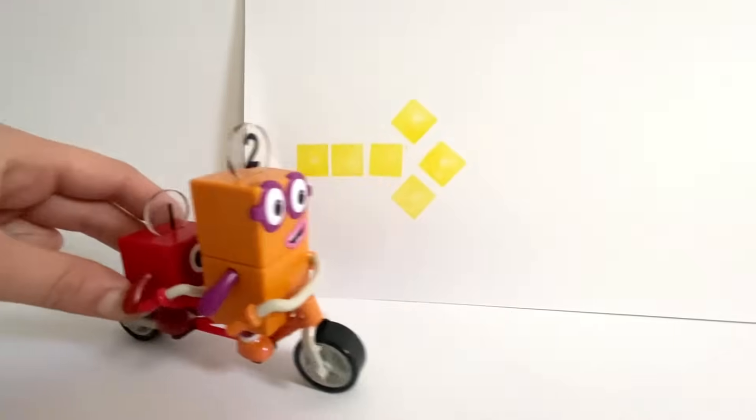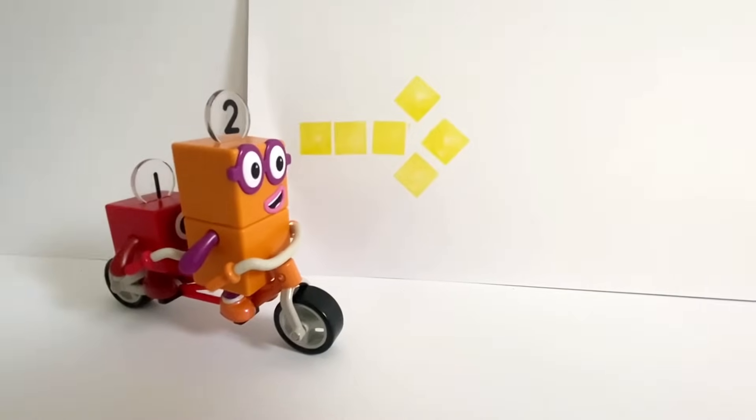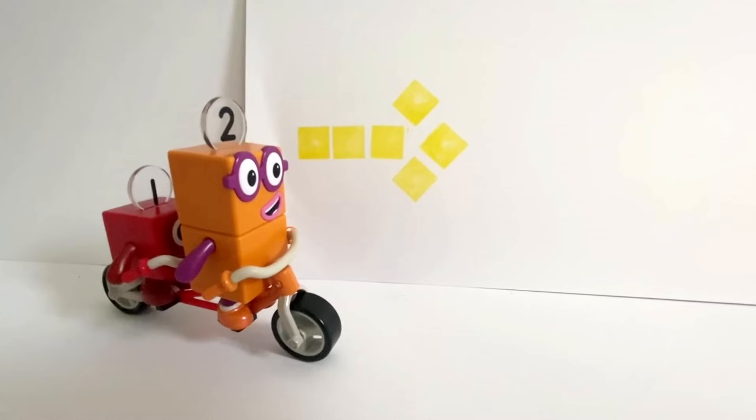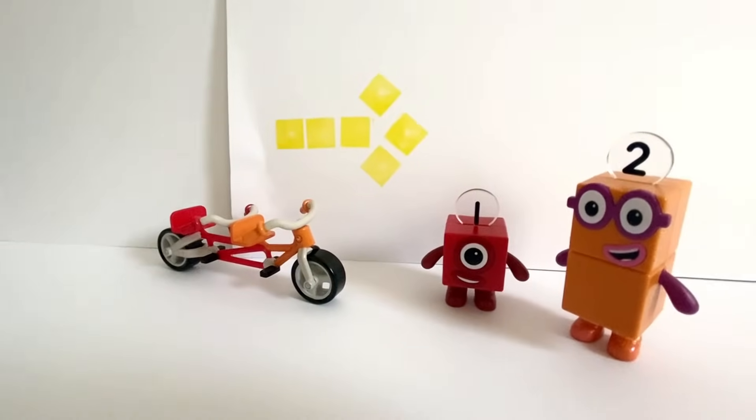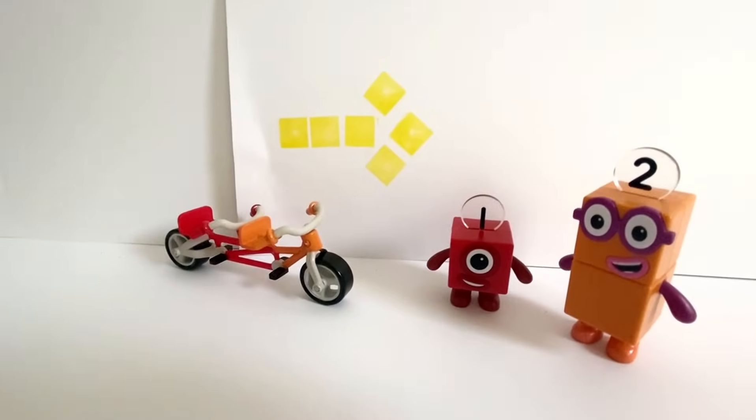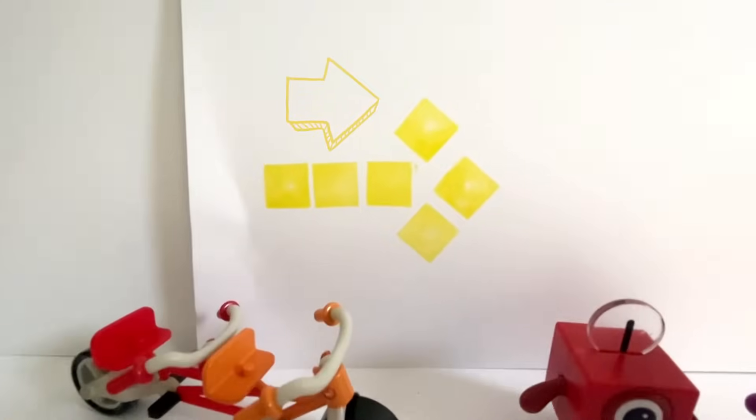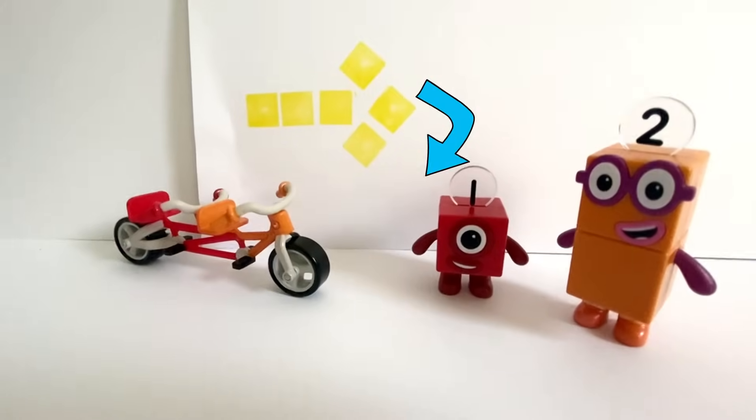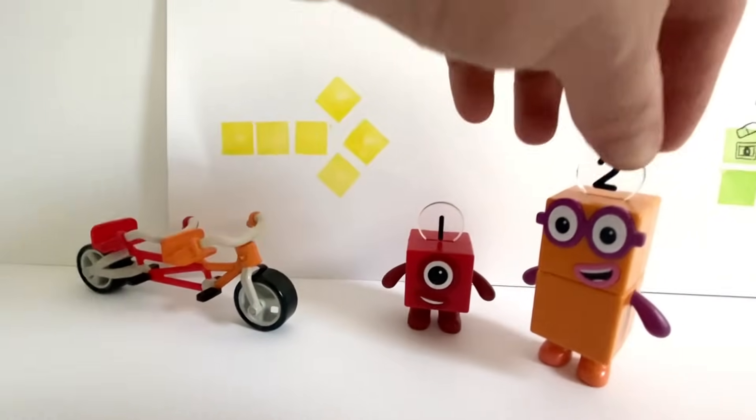NumberBlock 1 and 2 were riding on their tandem bike. What's that? NumberBlock 2 exclaims. NumberBlock 1 and 2 are looking at the arrow. It's 3 blocks that way and 3 blocks another way. It's pointing to the right.